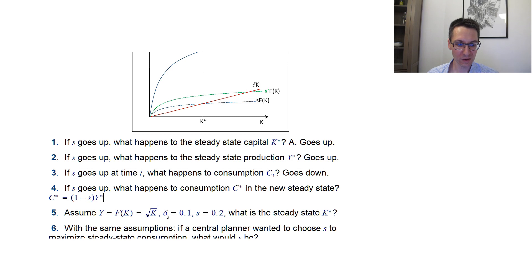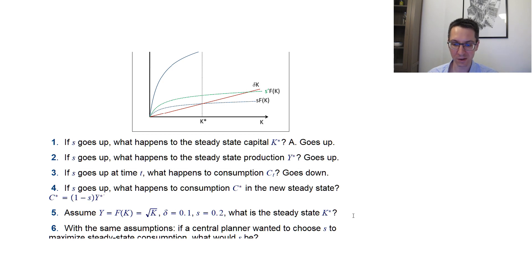Now question five: assume F(K) = √K, delta = 0.1, and S = 0.2. What is the steady state K*? We can just compute it easily.